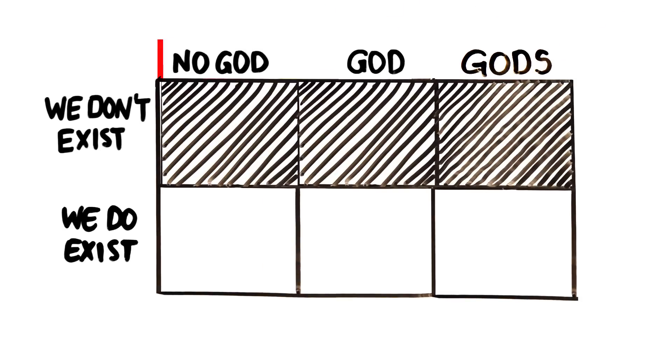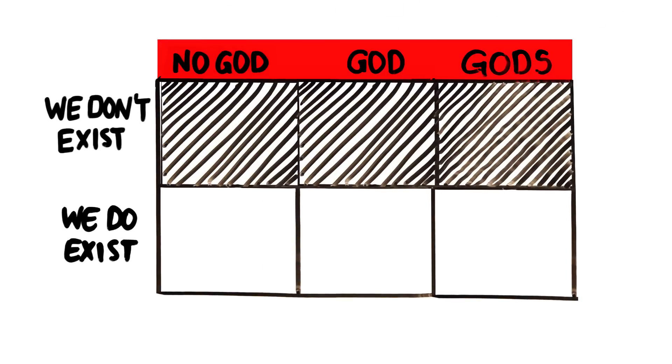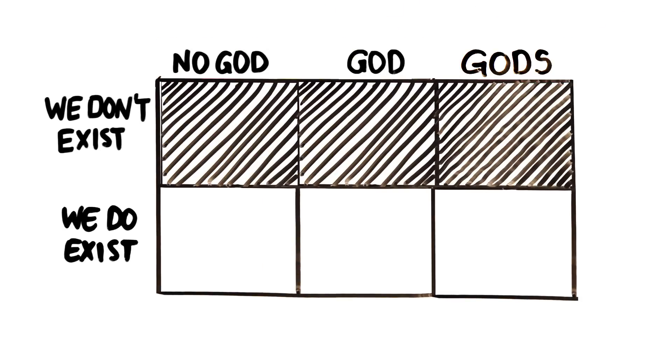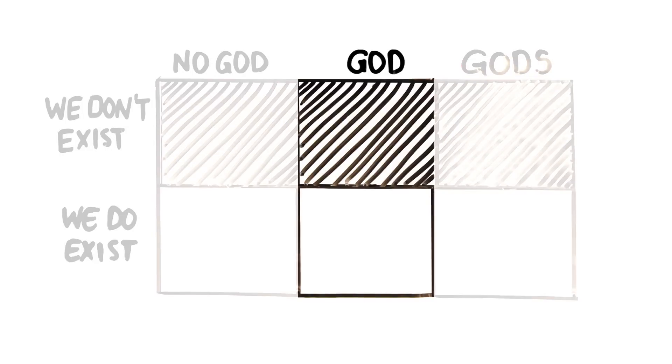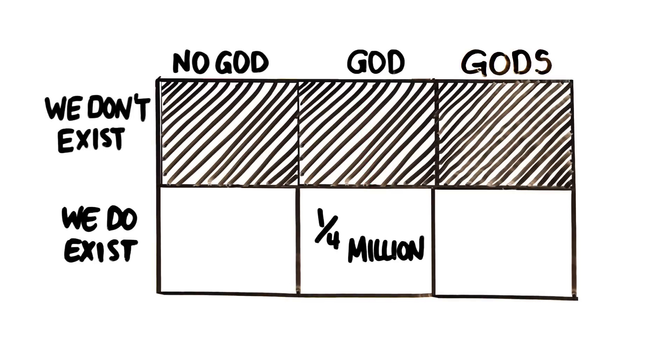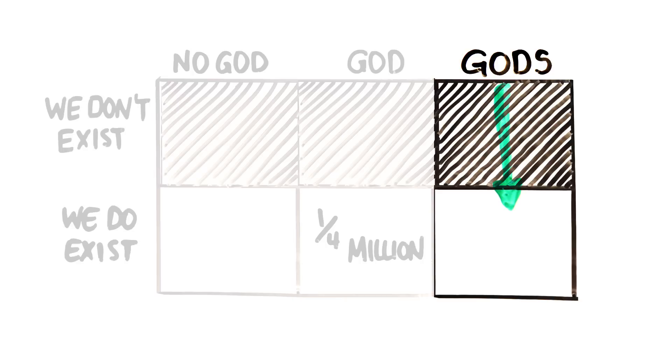But it's important to remember that the exact numbers don't actually matter. What does matter is that we can agree, rationally, that a universe with more gods has a higher chance of creating humans than one with a single god or none at all. It's also important to remember that we're not comparing the probability of gods or no gods existing. We're asking ourselves, if the god option is true, what is the likelihood of him making humans? And then we're asking separately, if the multiple gods option is true, what is the likelihood that they would make humans?